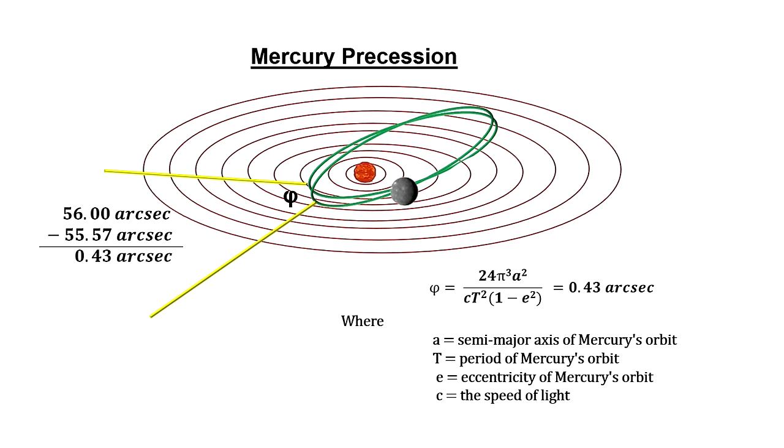With Schwarzschild's metric, Einstein came up with the exact number to cover the mysterious half an arc second. He had passed the first test of his new theory.